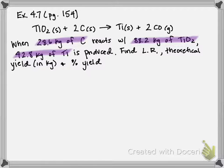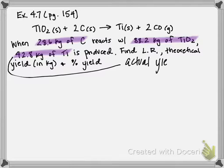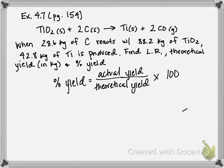The last number given, 42.8 kilograms of titanium, is the amount actually produced by somebody in the lab. We're going to set that aside for now — it is our actual yield. Our job is to calculate the limiting reactant and the theoretical yield, which we'll then plug into our percent yield equation.